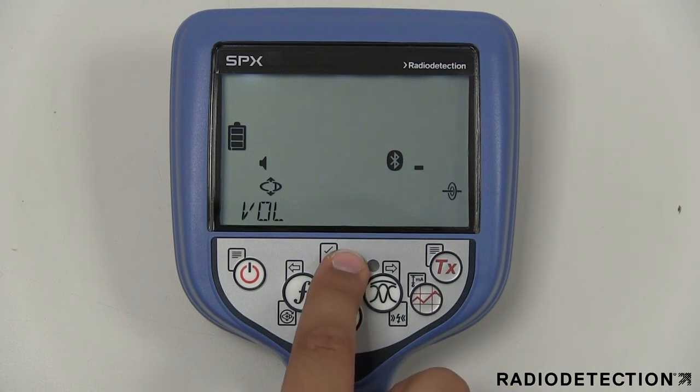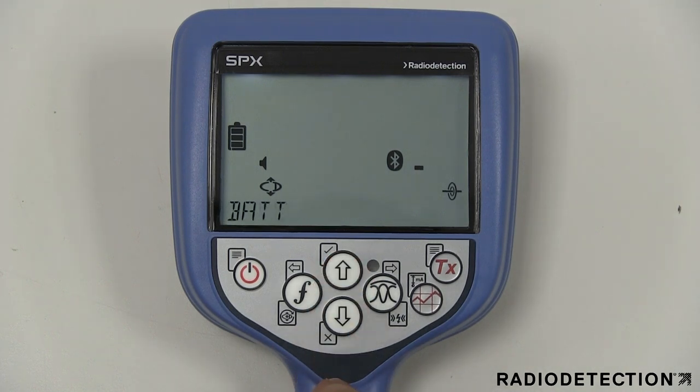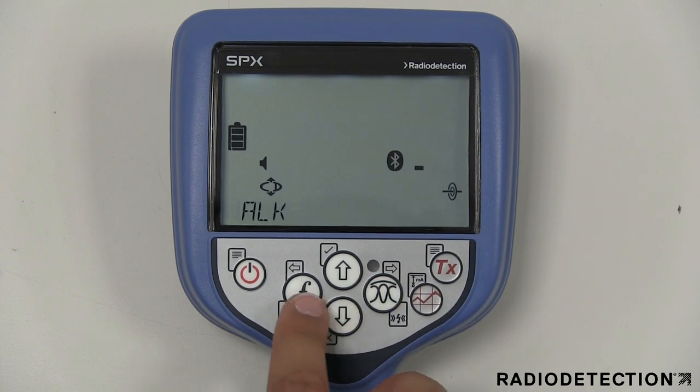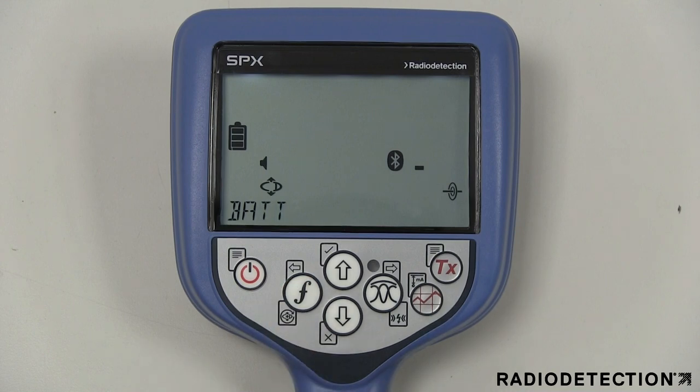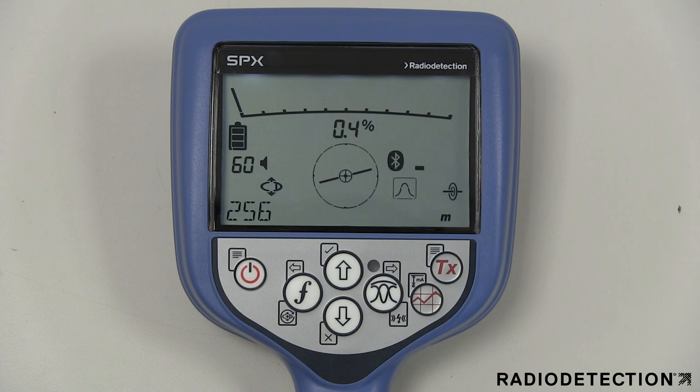Use the up and down keys to scroll through the menu options. Press the antenna key to enter the options sub-menu. Use the up and down arrows to scroll through the sub-menu options. Press the F key to make a selection and return to the previous menu. Then press the power key again briefly to return to the main operation screen.